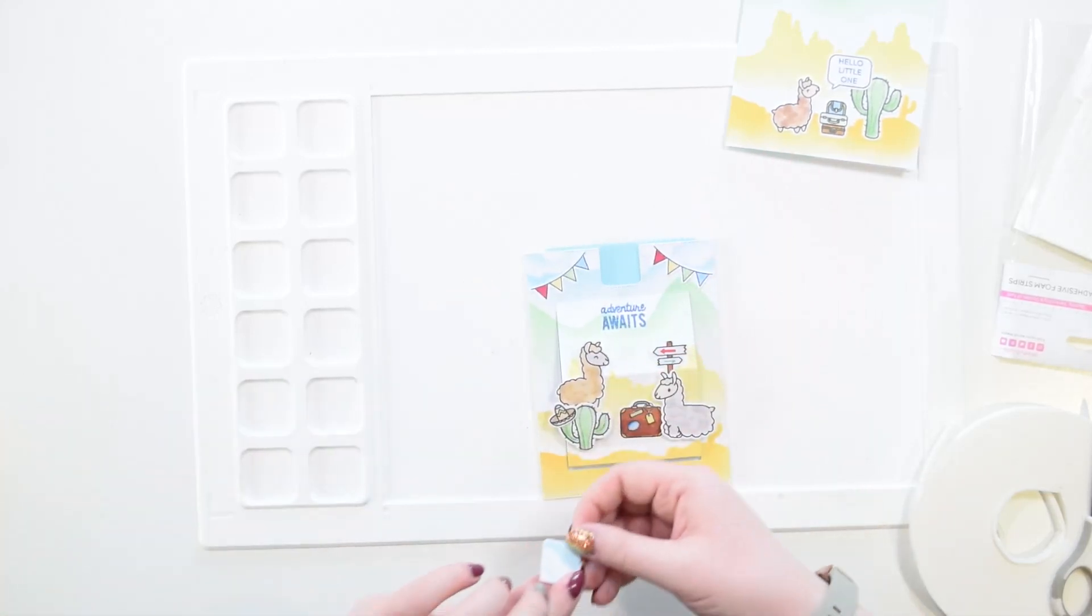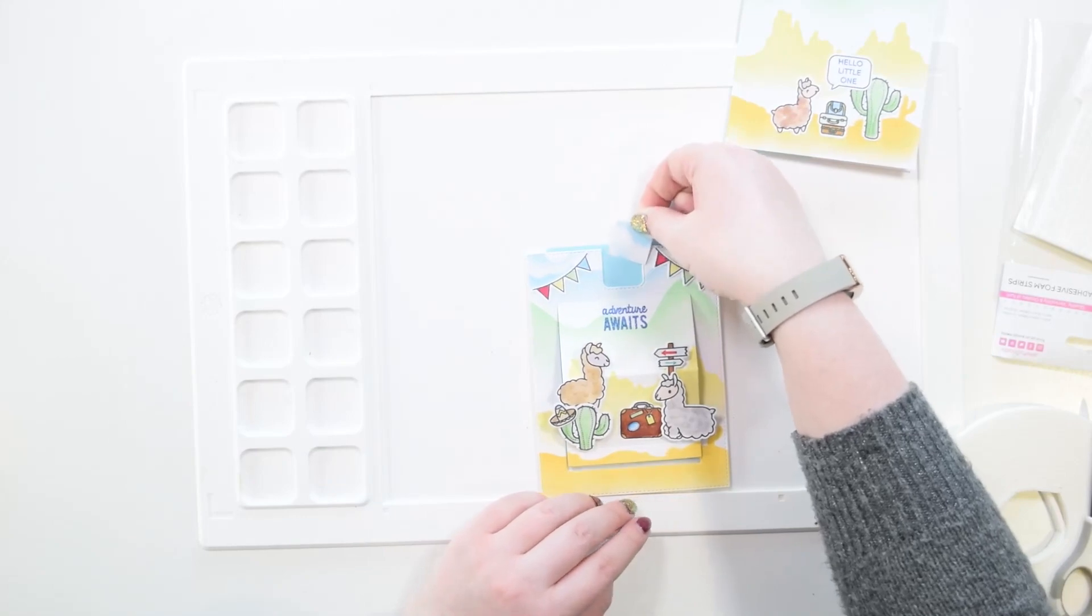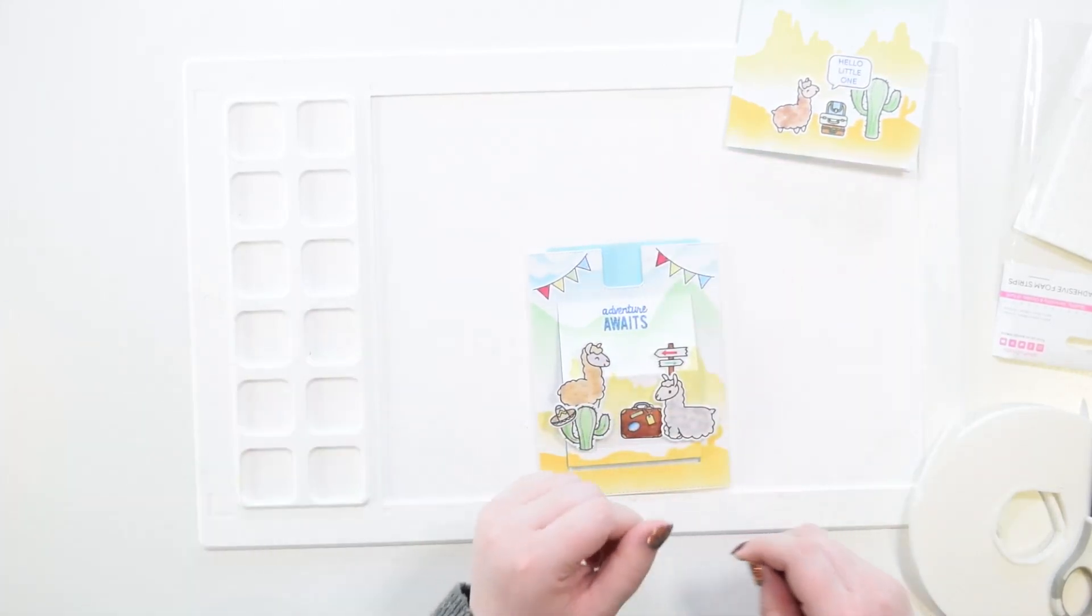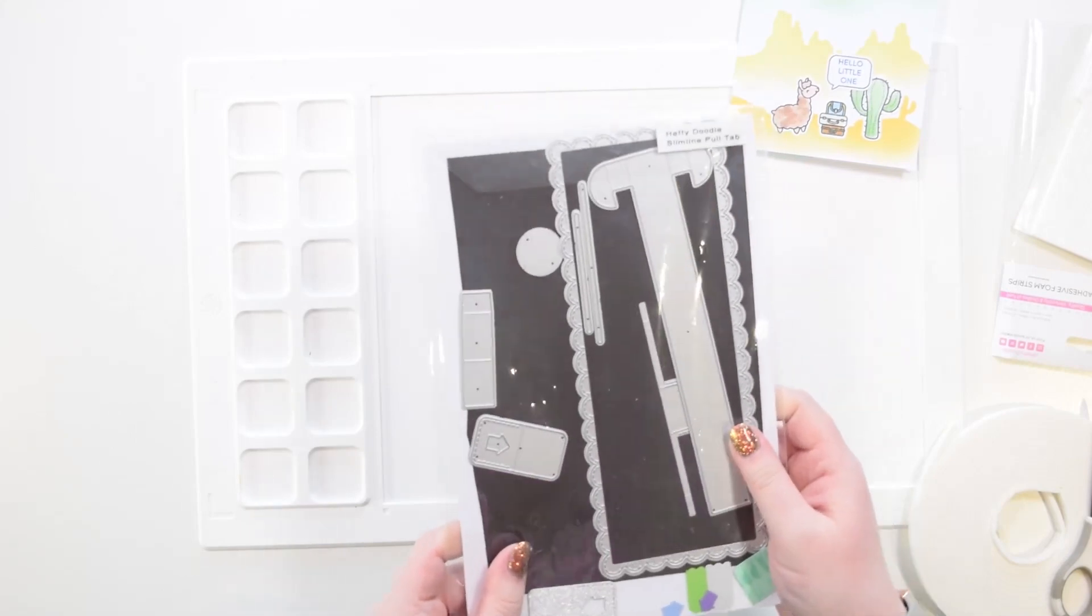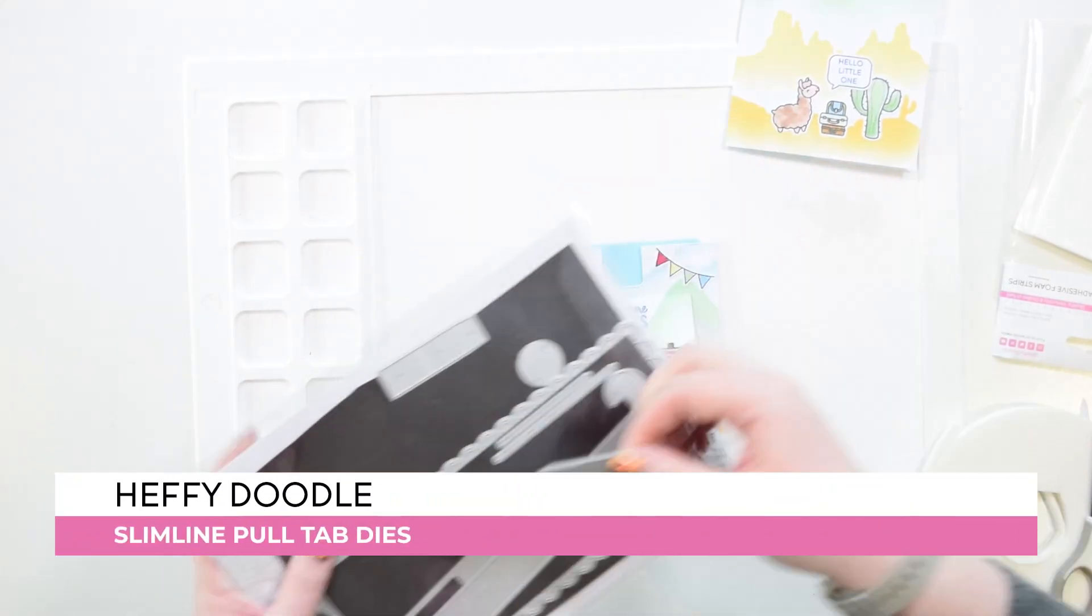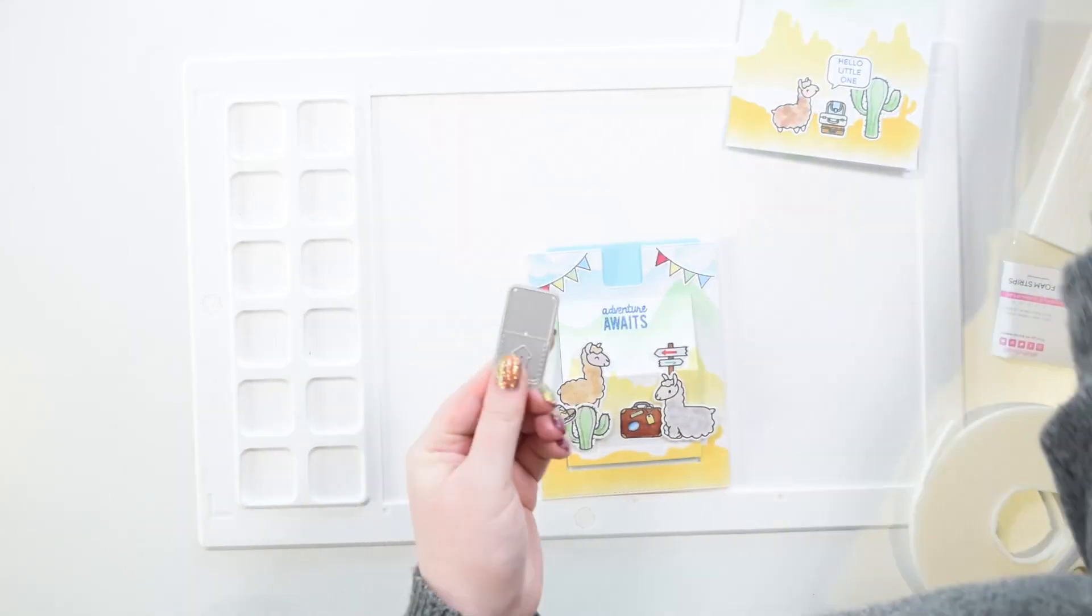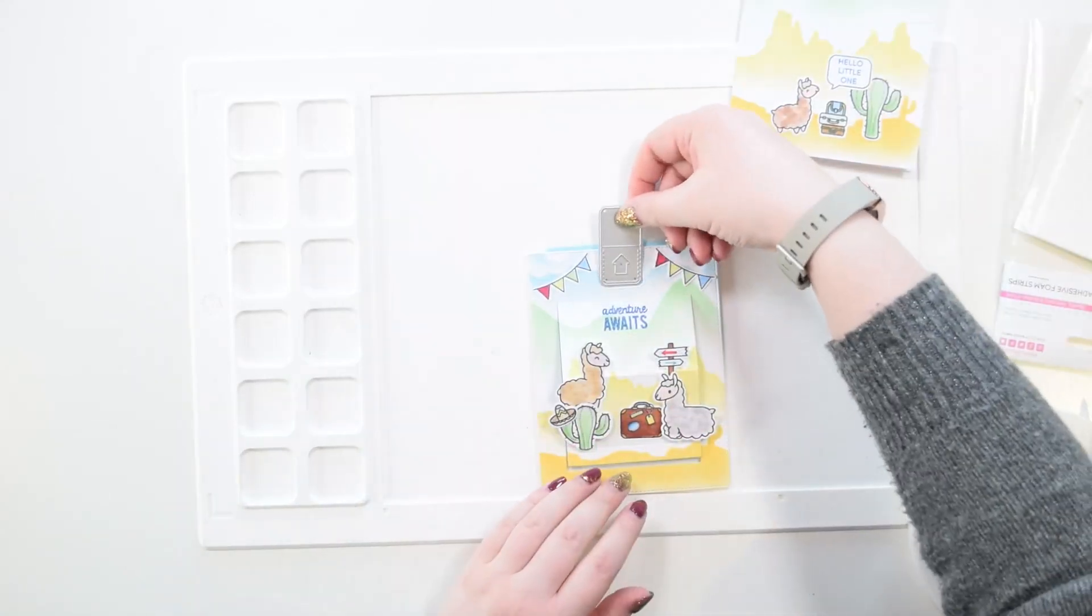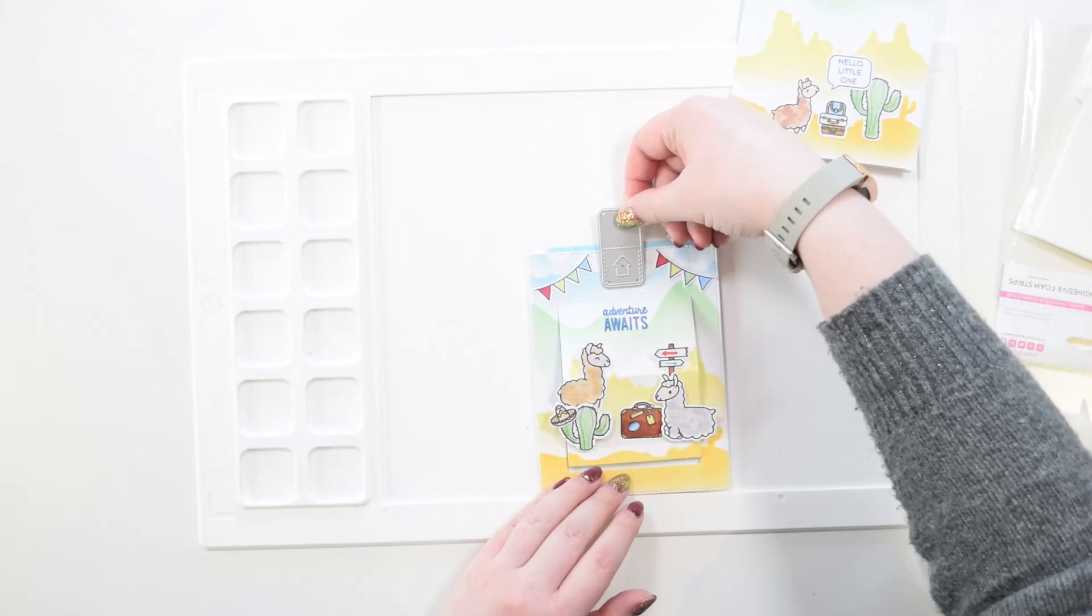So you'll notice when you die cut out your front panel in the first place, you're left with this tiny little square that fits at the top of your pull tab. Now you can use this, or you can take the pull tab section from the slimline pull tab dies, this little arrow piece here, and it fits that exact gap there. And that fits on both the slider pop-up die and the slimline slider pop-up die.